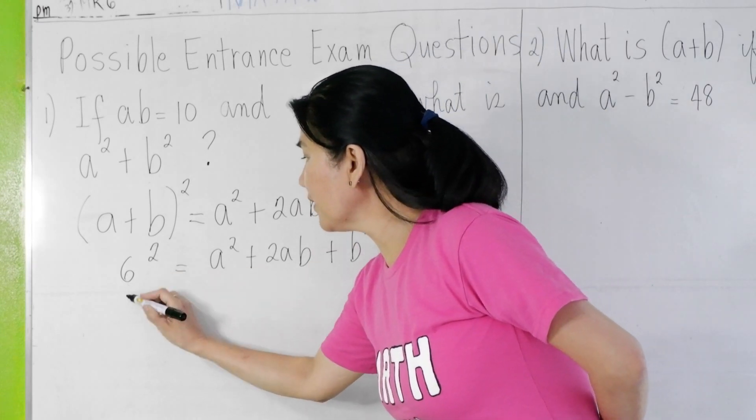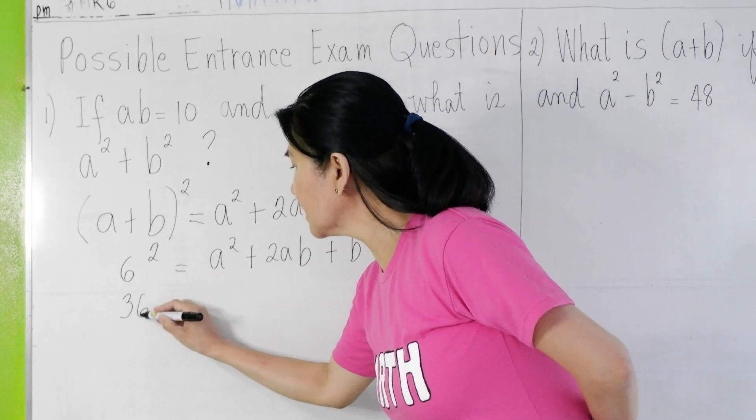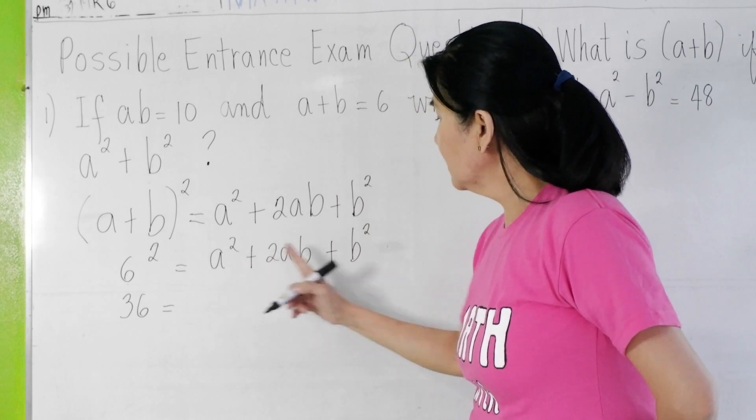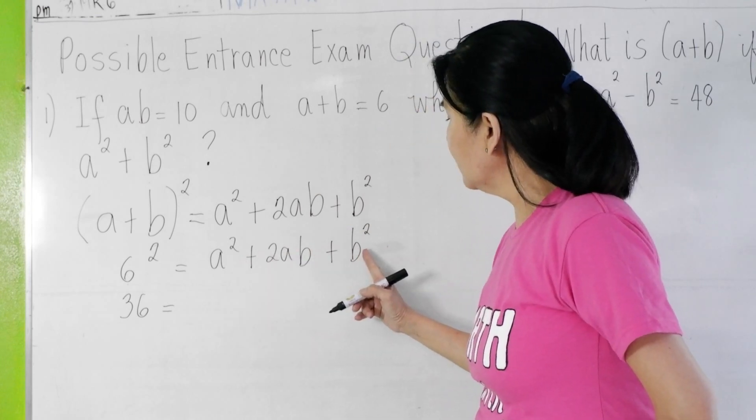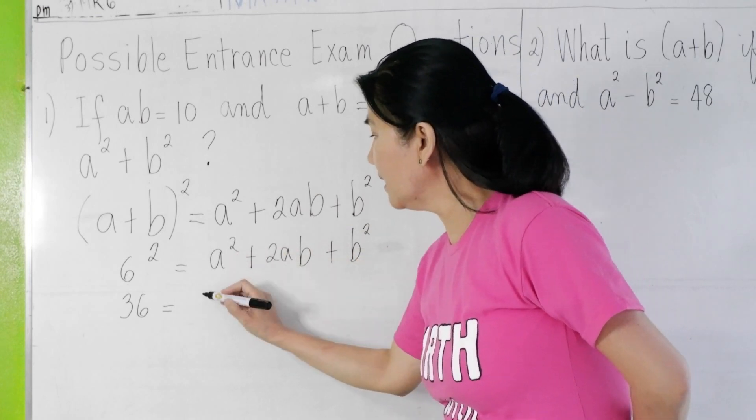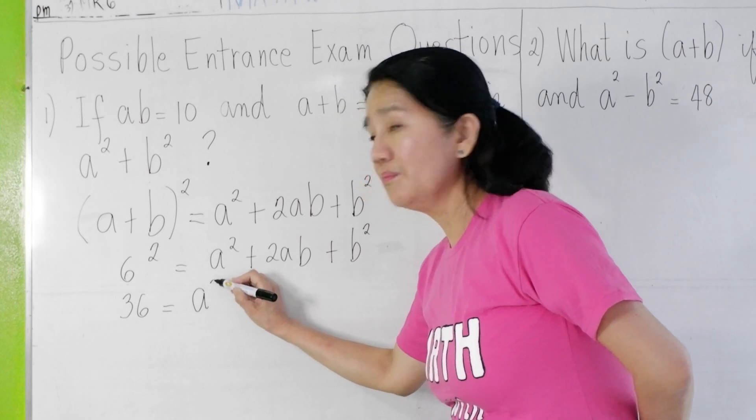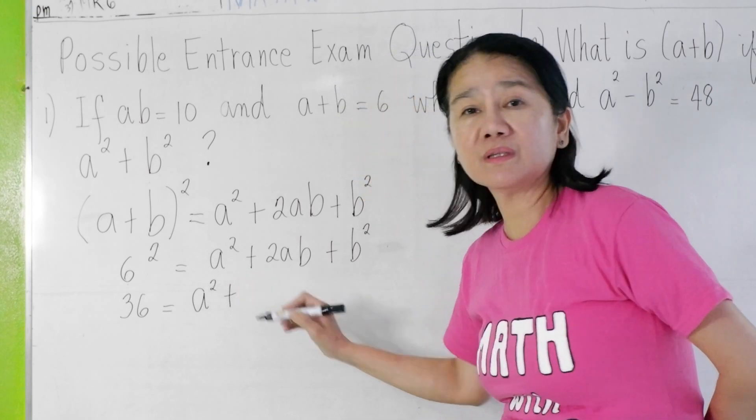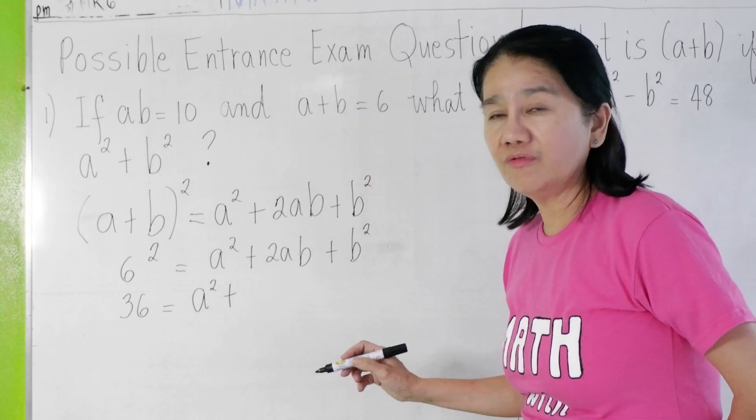You will be having 6 squared is equal to A squared plus 2AB plus B squared. Now simplify. 6 squared is 36 equals. Can I now write B squared besides A squared? Yes, because of the commutative property of addition.